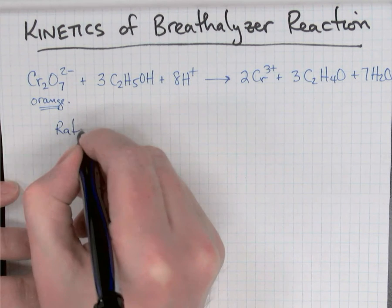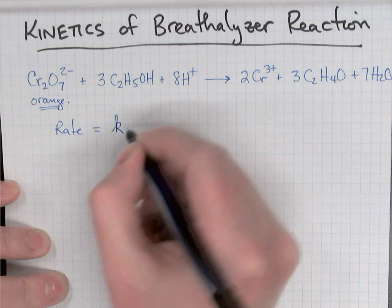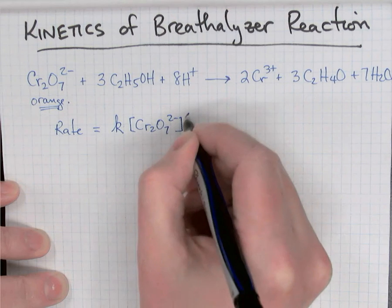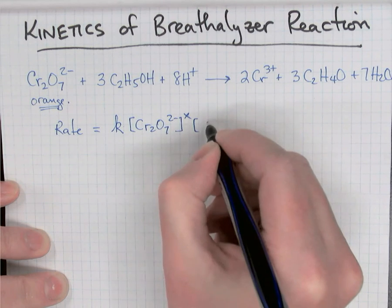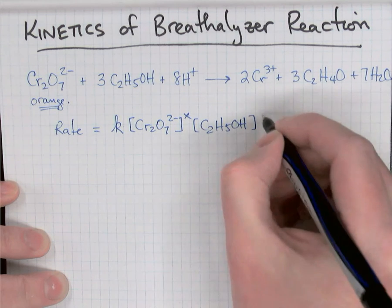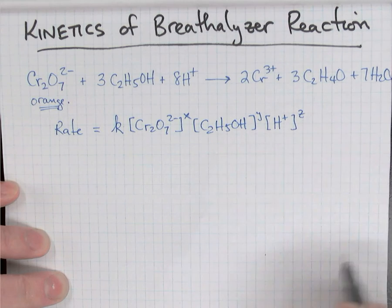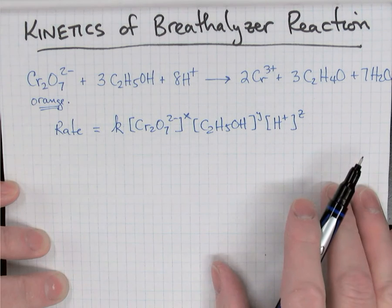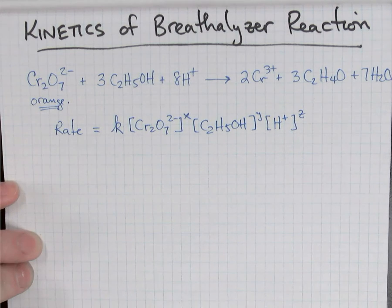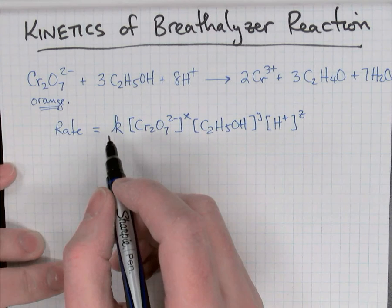So if we think of the differential rate law, the rate for this would equal a rate constant times the concentration of dichromate to some order X, the concentration of alcohol to some order Y, and the concentration of acid to some order Z. Now that's a pretty complicated looking rate law. To simplify things so that we could actually study this using an integrated rate law method, we flooded the reaction system.